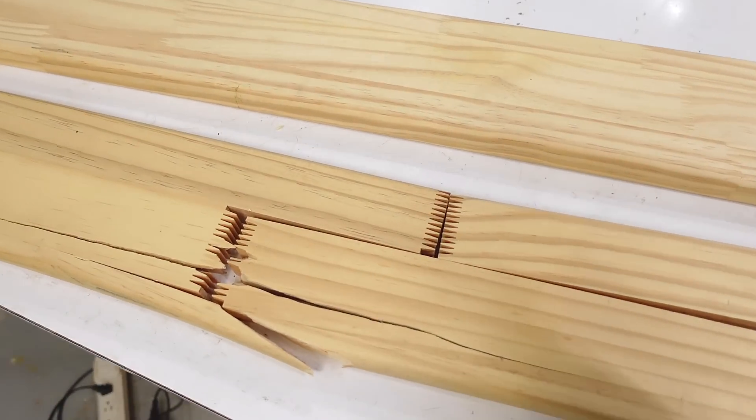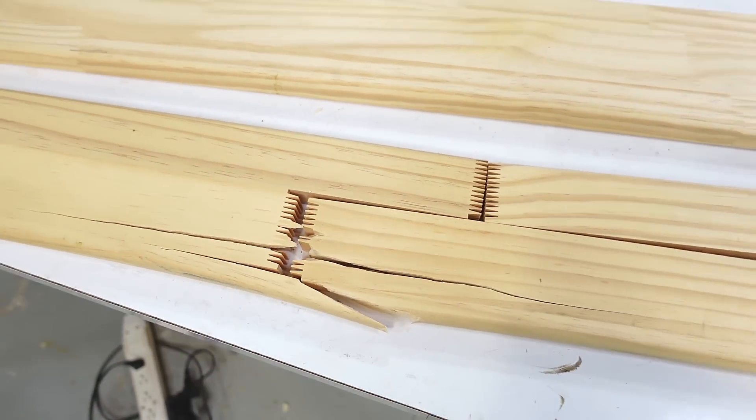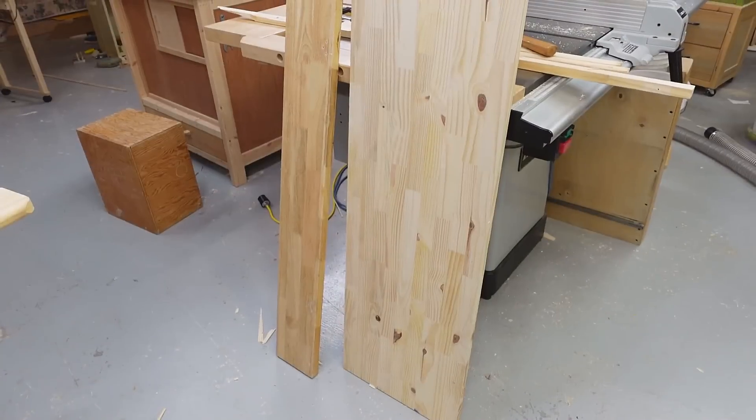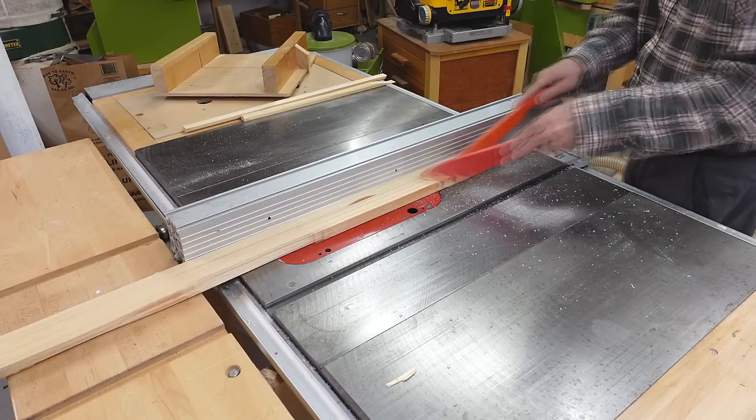I scavenged some boards off a bed frame on the curb and this one is finger jointed and broke right at the joint. I thought with the shape of those finger joints they should be close to the strength of the wood, but maybe not. I've got some more finger joint boards so let's do some testing to see how strong those joints are.